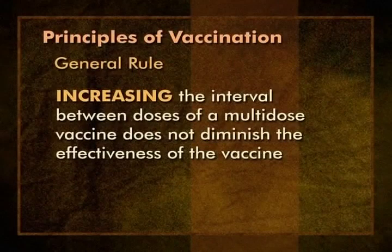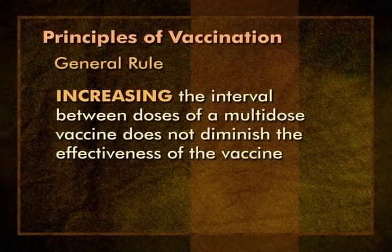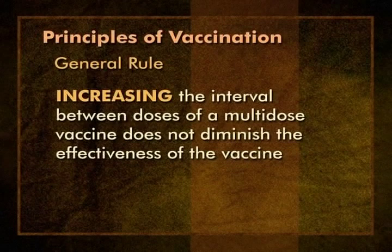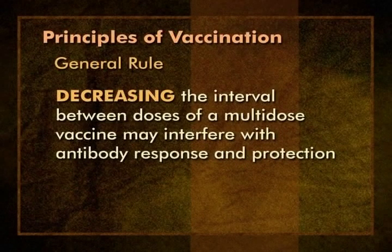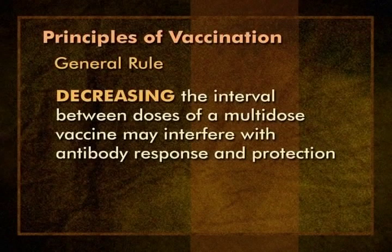You should always try to keep the child on the routine schedule. But sometimes children are brought in early, or more commonly, a child is behind in the schedule and needs to be caught up. Spacing becomes an issue when assessing a record of vaccines given outside the United States, since non-U.S. schedules may differ from those used here. The general rule that applies: increasing or lengthening the interval between doses of a multi-dose vaccine does not diminish the ultimate effectiveness of the vaccine after the series has been completed. While an increased interval between doses does not ultimately reduce antibody titers or protection, it may compromise protection in the short run because the series is incomplete. However, decreasing the interval between doses of a multi-dose vaccine may interfere with antibody response and protection. Doses given too close together may not provide the full benefit of the vaccine.